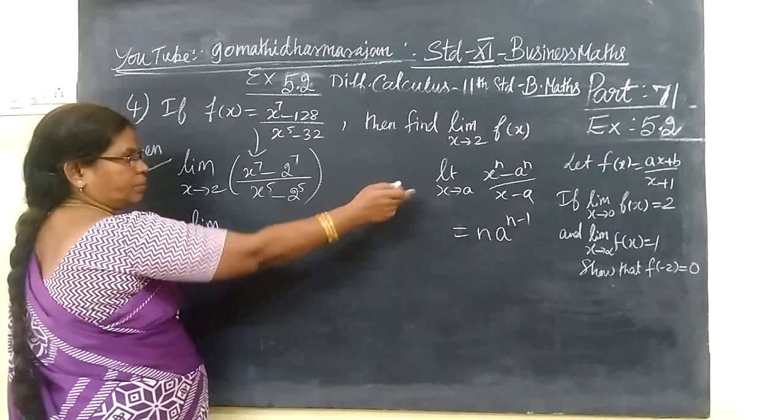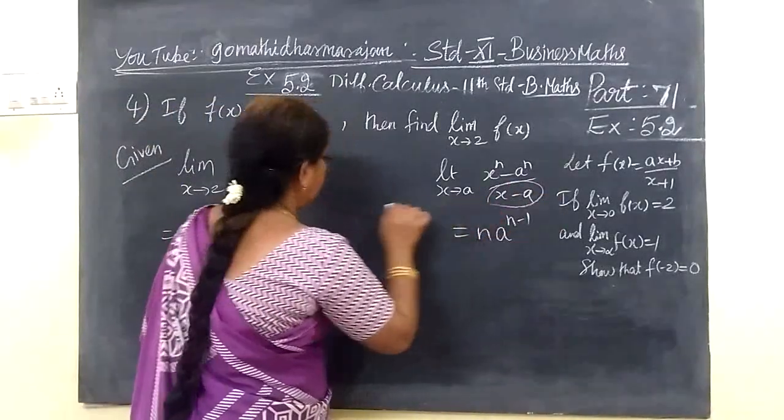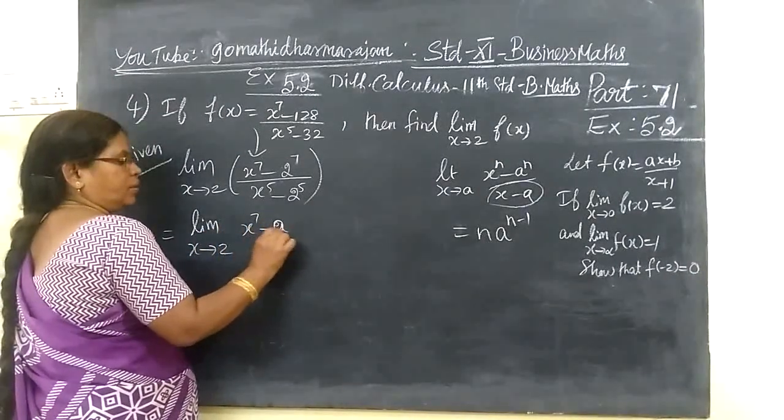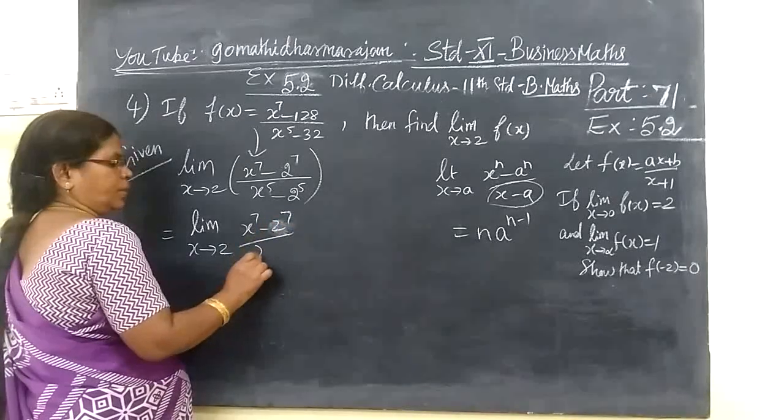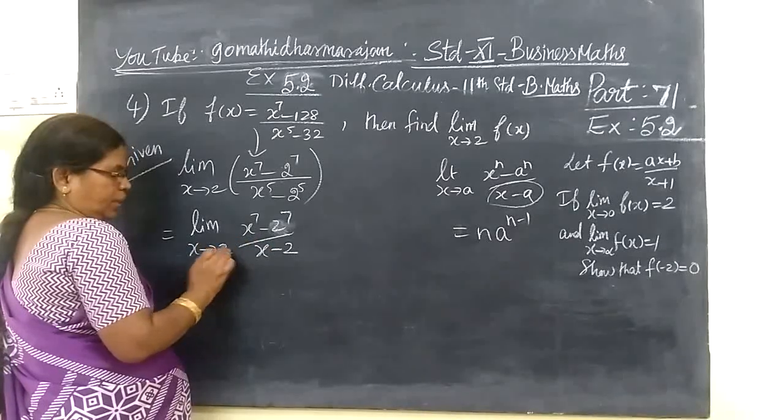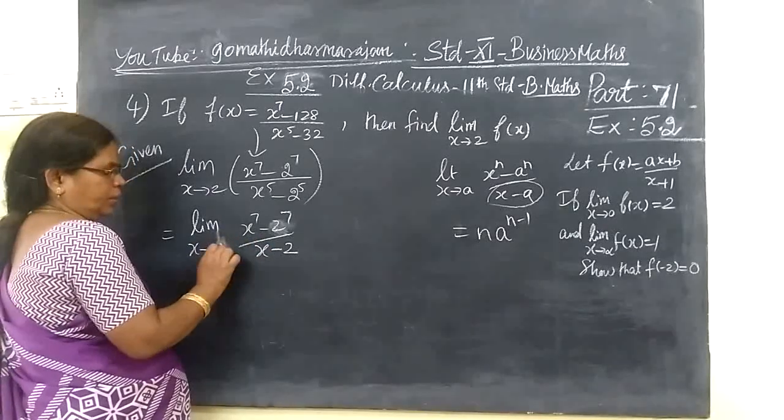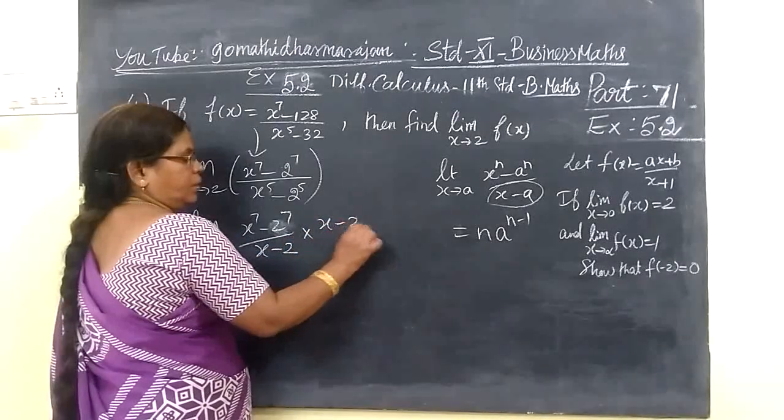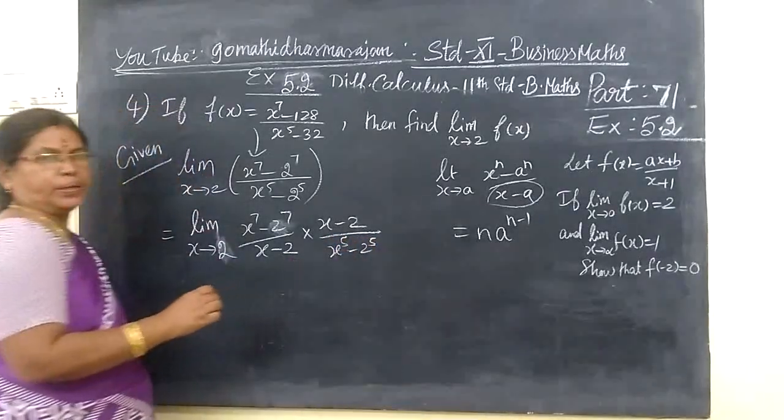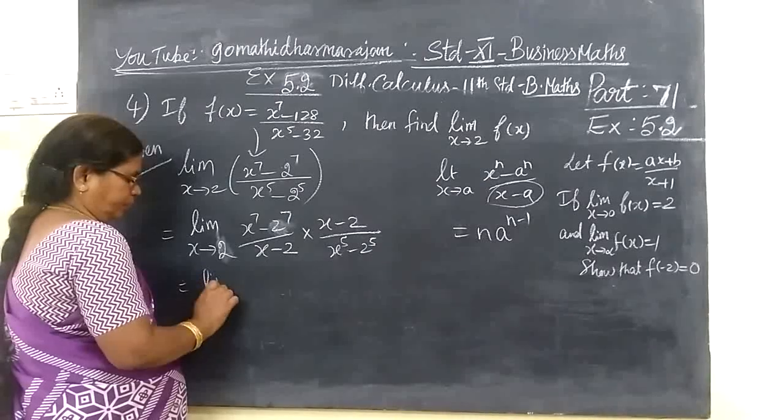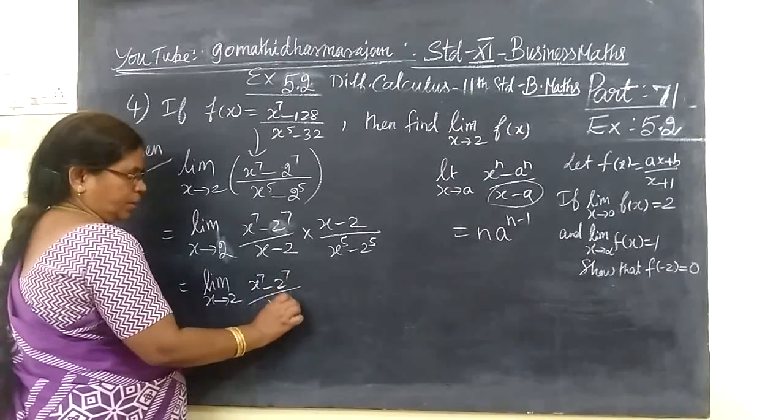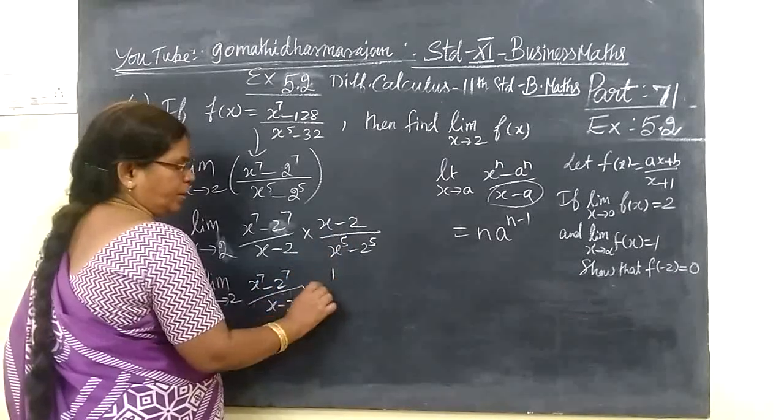So this is the formula, now x minus a. Here is no x minus a term, so multiply and divide. So x power 7 minus 2 power 7 by x minus 2. A is 2, multiply and divide by x minus 2.